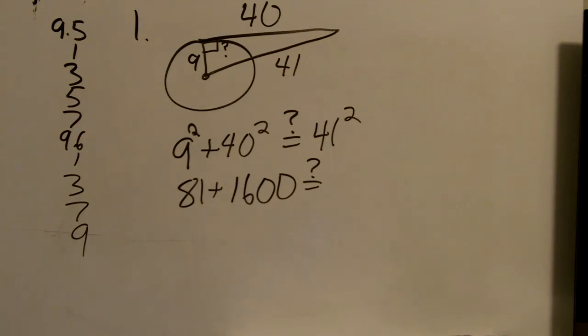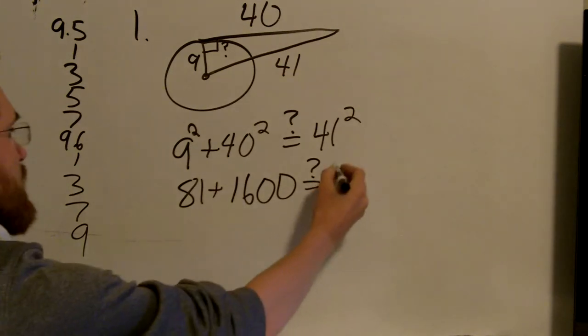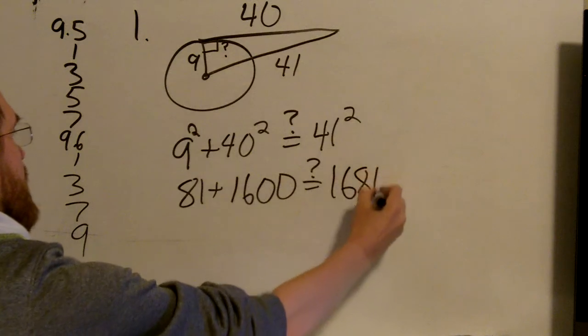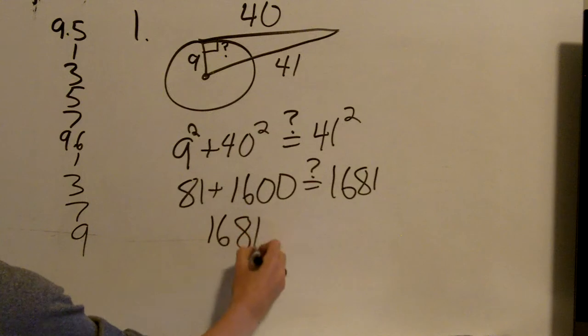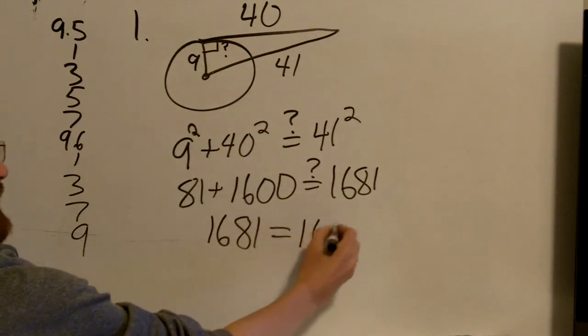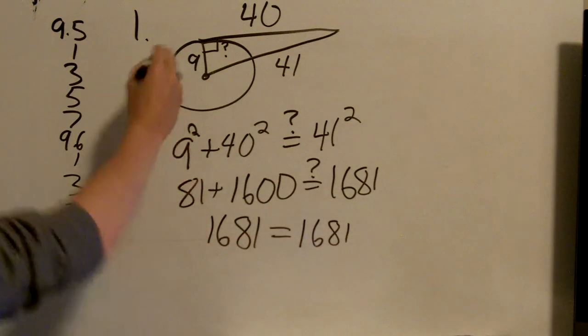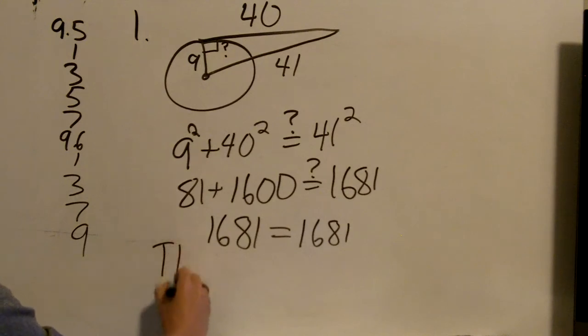And see if that gives me 41 squared. Put that in my calculator, 41 squared, or 41 times 41, 1,681. Add those together in my calculator, 1,681 equals 1,681. That means this is a tangent.